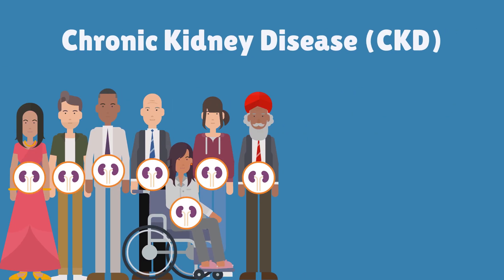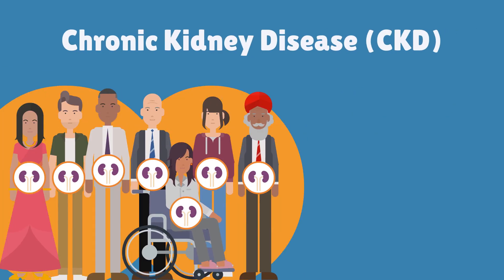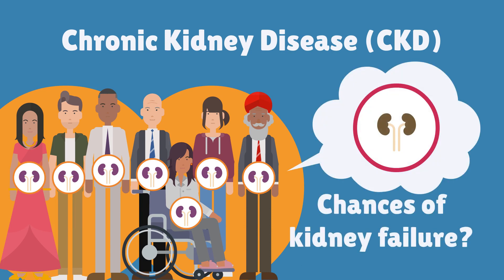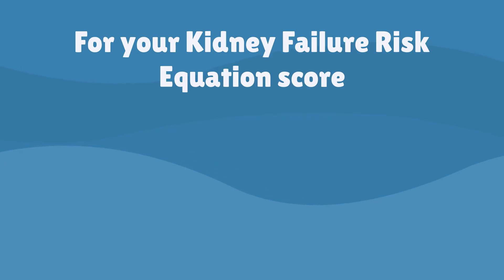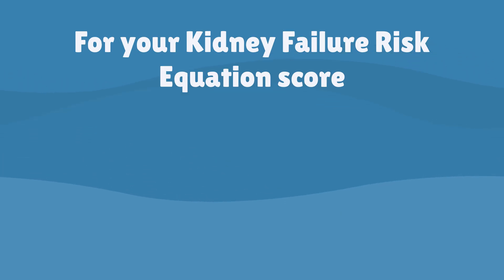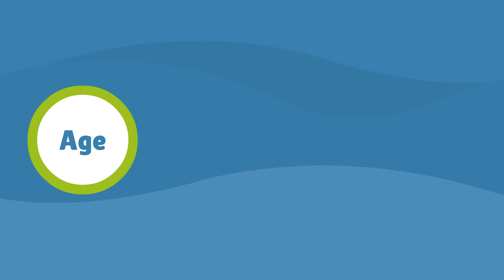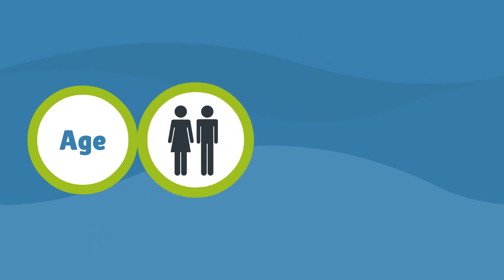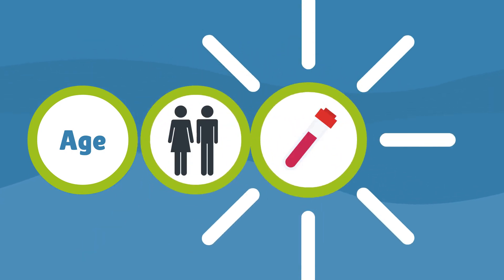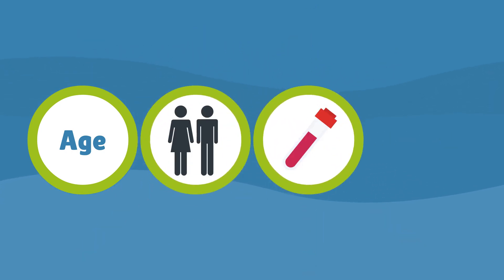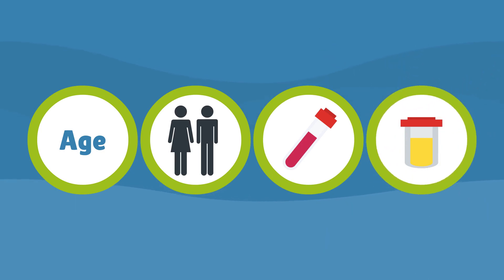For someone with chronic kidney disease, the kidney failure risk equation tells them their chances of having kidney failure in the future. To work this out, we need four pieces of information: the person's age, if they are male or female, a blood test, and a urine test.